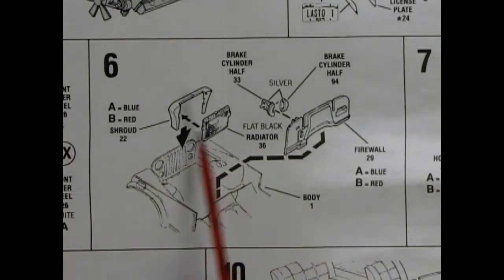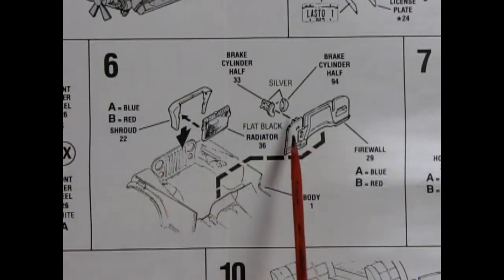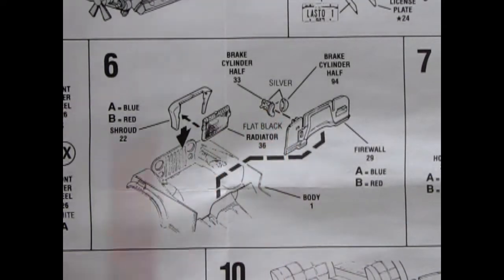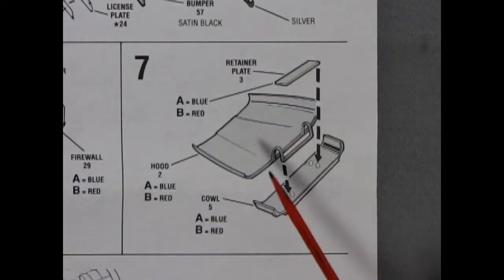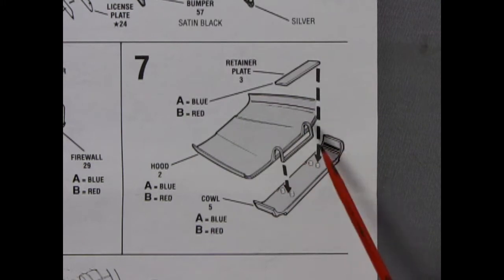Panel 6 shows our radiator and radiator shroud being glued into the front of the body as well as the firewall and brake cylinder. Our Jeep includes an opening hood that has a hinge on it, held into place on the underside of the cowl with this nice retainer plate.